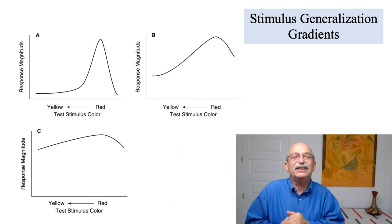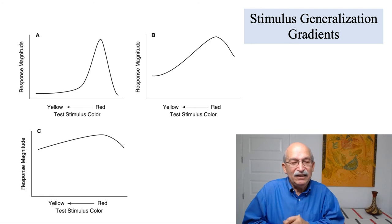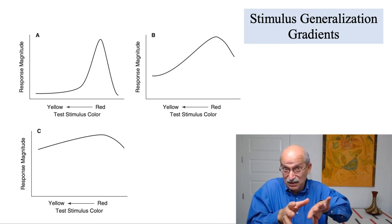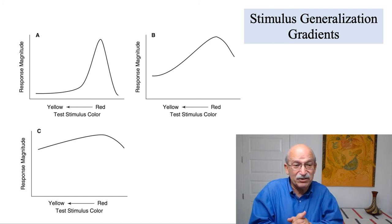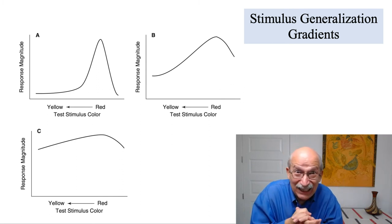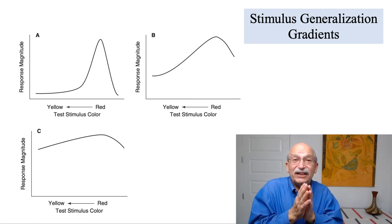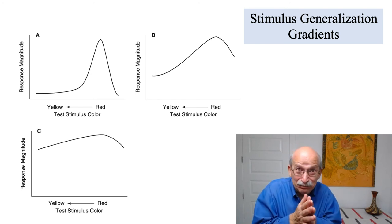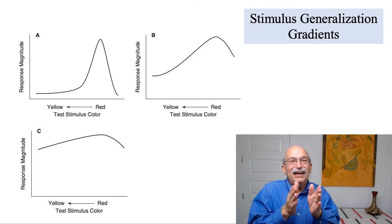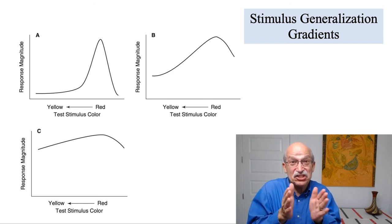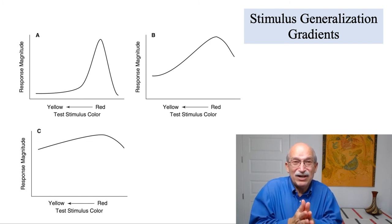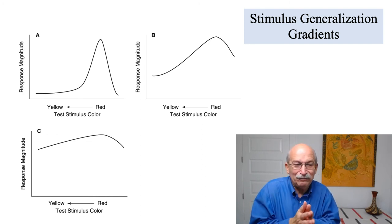B is an intermediate example — you get the most behavior with red, and as the color becomes more yellowish, behavior drops off. A is even more precise in terms of what the exact color needs to be for the behavior to happen. A represents a very steep generalization gradient, and that represents the greatest level of stimulus control.